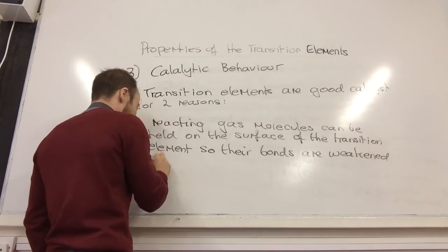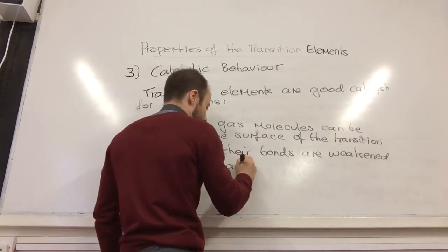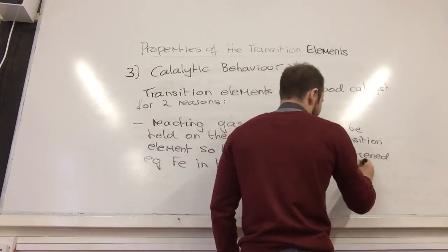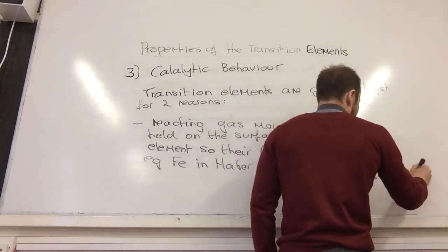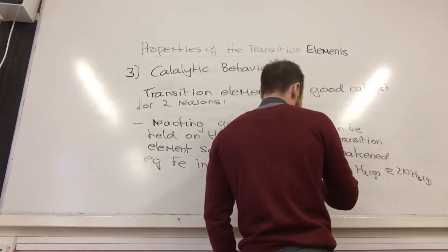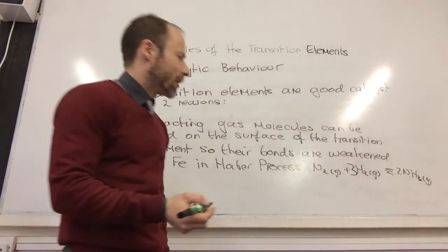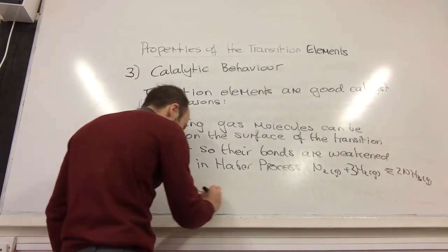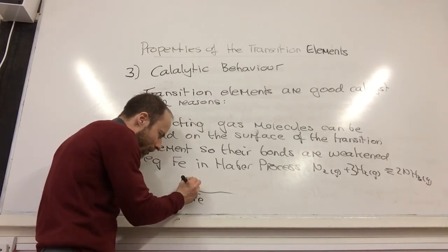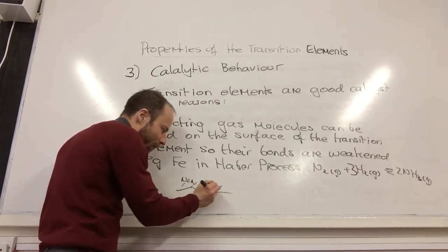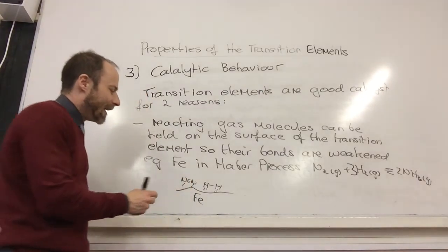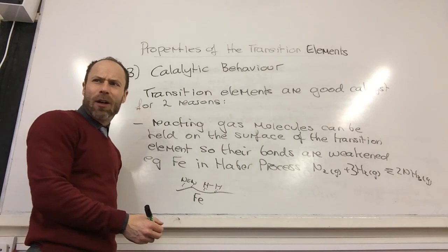For example, iron in the Haber process, which you all know, is N2 gas plus H2 gas making ammonia. When we talked about iron, you've got the iron surface like that, and iron forms weak bonds with nitrogen. So along comes nitrogen and then hydrogen as well forms a weak bond. Because it forms a weak bond with iron, it weakens the bond between the two atoms. And then because they're also in the same place, they can react.